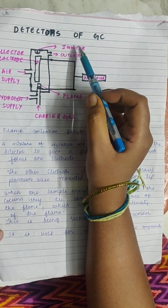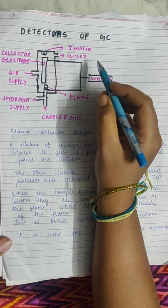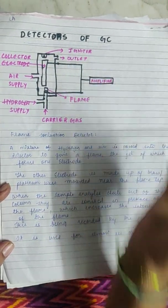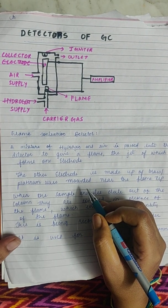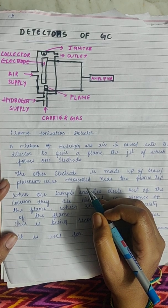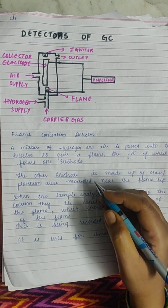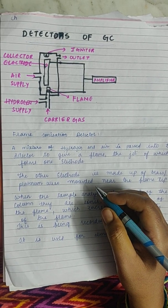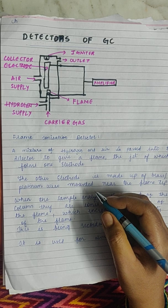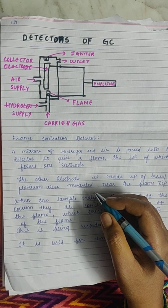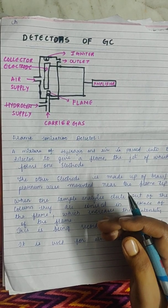Good afternoon. Today we will be starting with the next topic of gas chromatography — that is, detectors of gas chromatography. What are the different types of detectors used, how they work, and what compounds can be analyzed by them? The detectors include flame ionization detector, electron capture detector, flame photometric detector, mass spectrophotometer, nitrogen phosphorus detector, and Fourier transform infrared spectrometer.